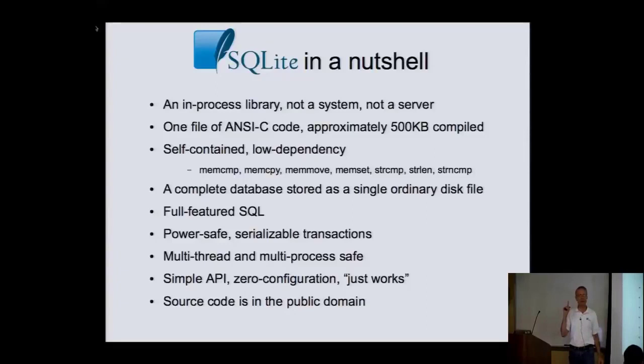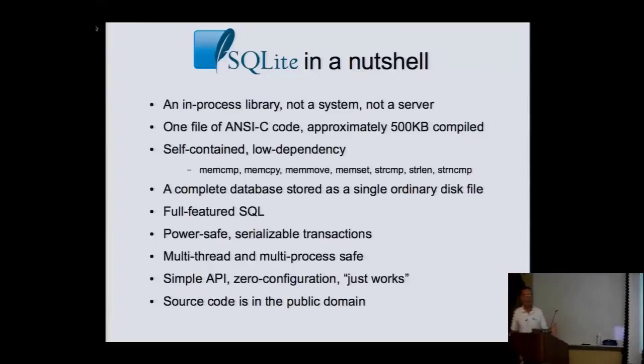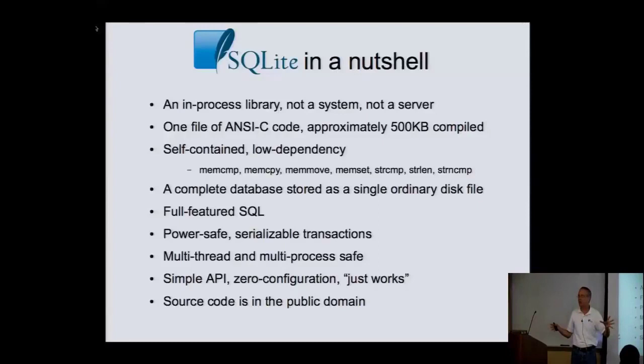It's delivered as a single file of ANSI C code. This is a large file, and we don't actually develop by editing that one big file. We have hundreds of files and then part of our make process concatenates them all together in the right order. But that makes it very easy to deploy. It compiles down to roughly 500 kilobytes — very small and compact, with a small footprint and low dependencies.